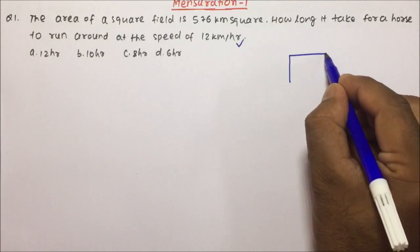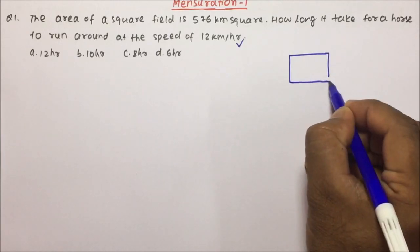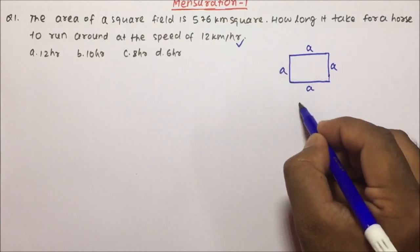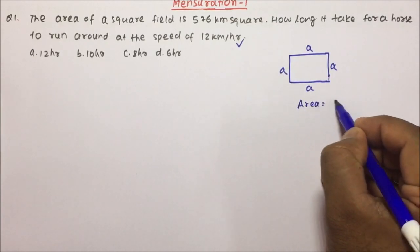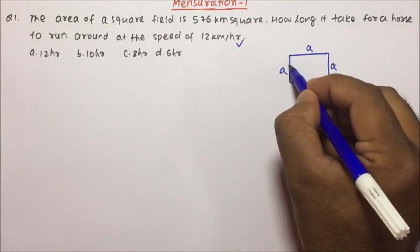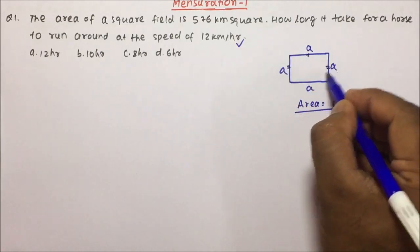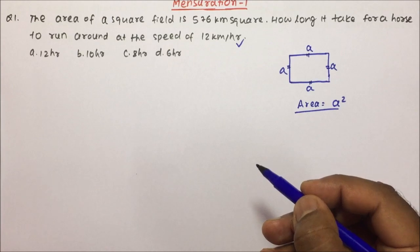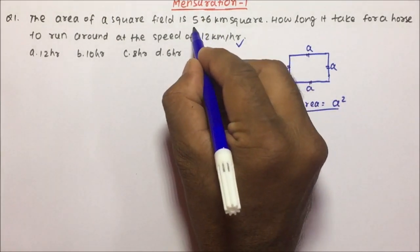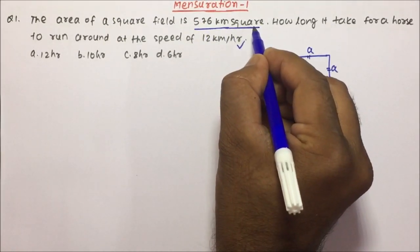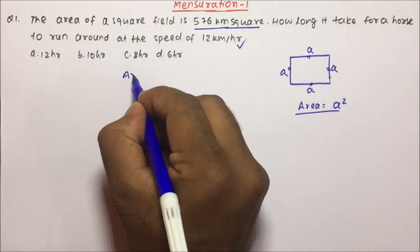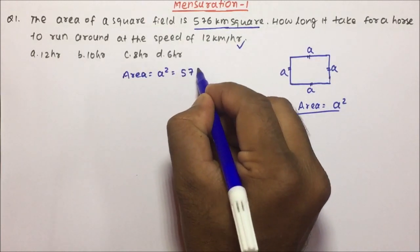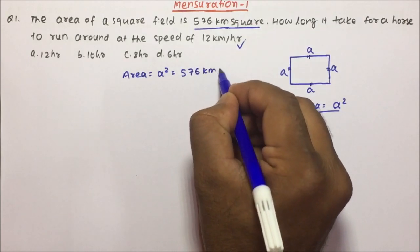If I talk about a square, this is the side of the square. The area of a square will become side squared, because all four sides of the square are equal. Now the area is given — area is 576 km². So area equals a², and a² is nothing but 576 km².